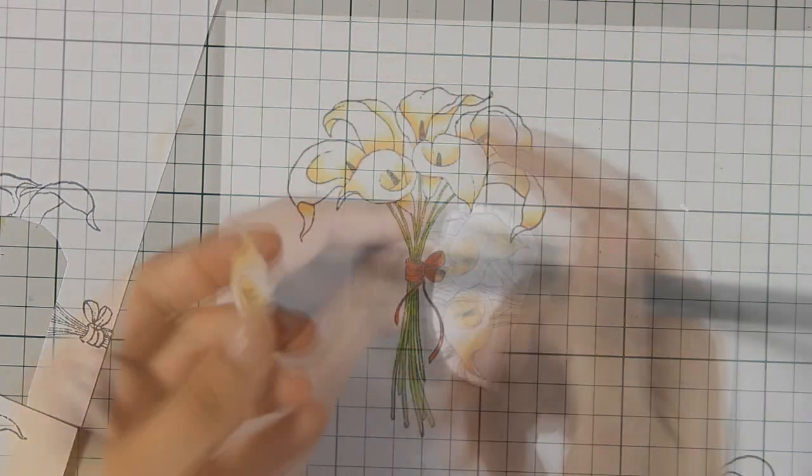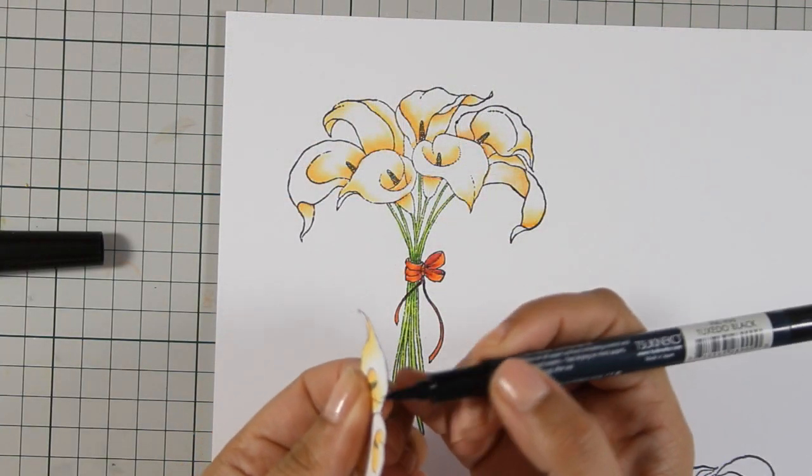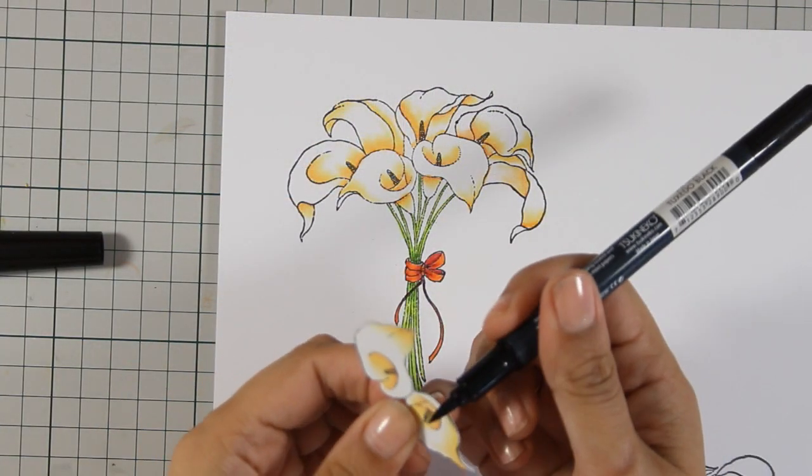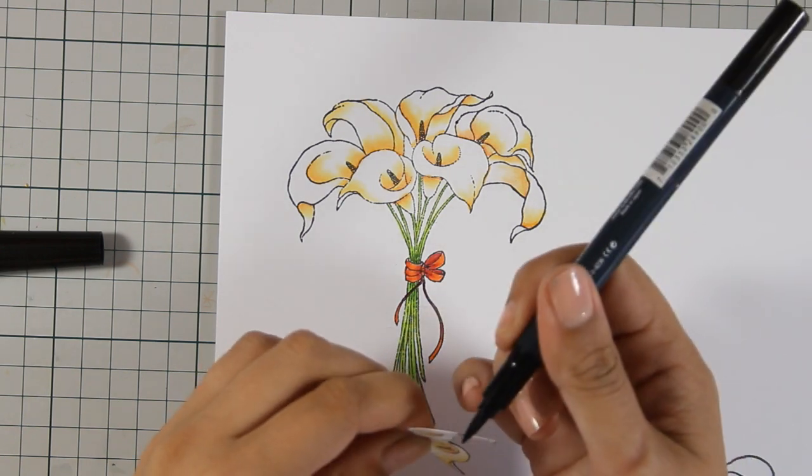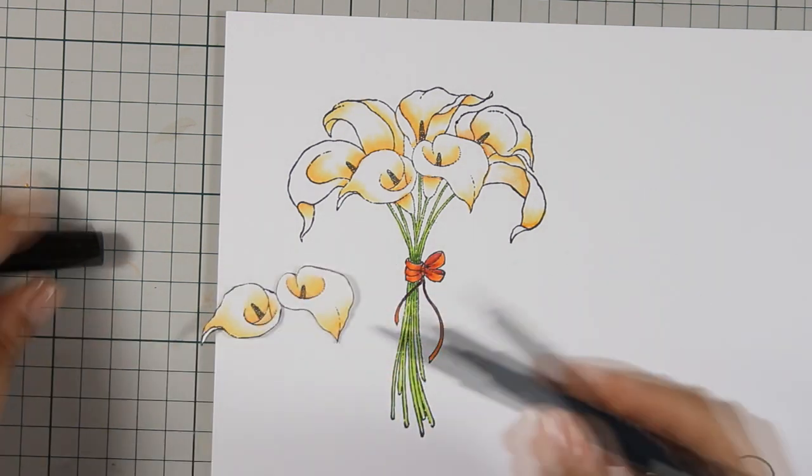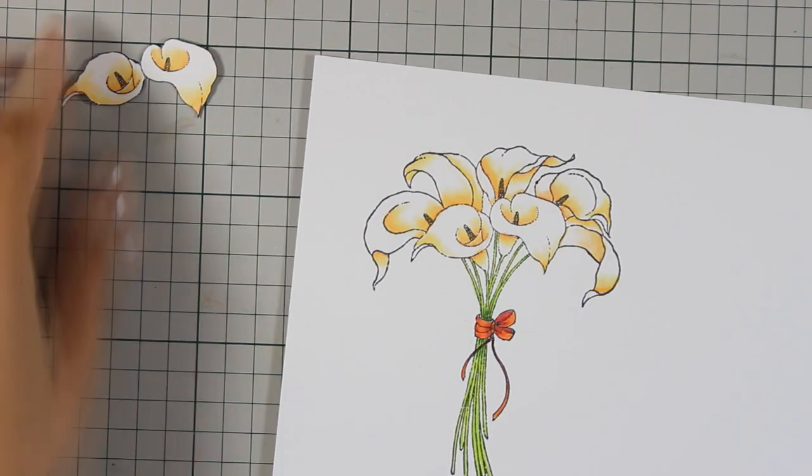Once those flowers were cut out, I am using my black brush marker to go around the edges to get rid of that white edge. This is going to give the illusion that I have cut out the image perfectly.